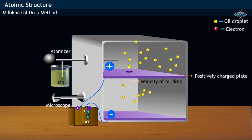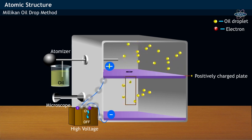The velocity of oil droplets could be controlled by changing the voltage across two plates. At high voltage, the negatively charged oil droplet tends to move upwards or rise towards the positively charged plate.